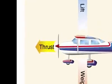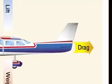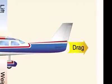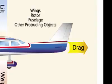Thrust is the forward force produced by the power plant, propeller, or rotor, and is opposed by drag. Drag is the rearward, retarding force caused by air that has been disrupted by the wings, rotor, fuselage, and other protruding objects, and opposes thrust.